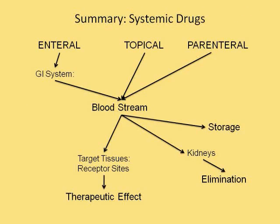So let's look at everything we've talked about so far. Drugs get into the body through the enteral system, a topical medication, or parenterally. All three ways, the drug eventually makes it into the bloodstream. From there, the drug can go to the target tissues and have a therapeutic effect, or it can go to the kidneys and be eliminated. The one we didn't mention is that some drugs actually go into storage — they are stored in some of the fat cells in various ways.